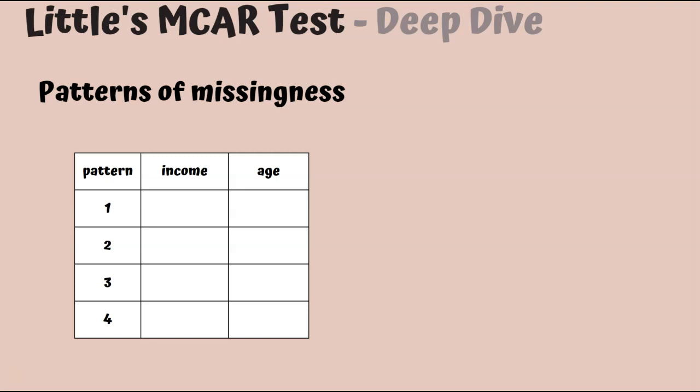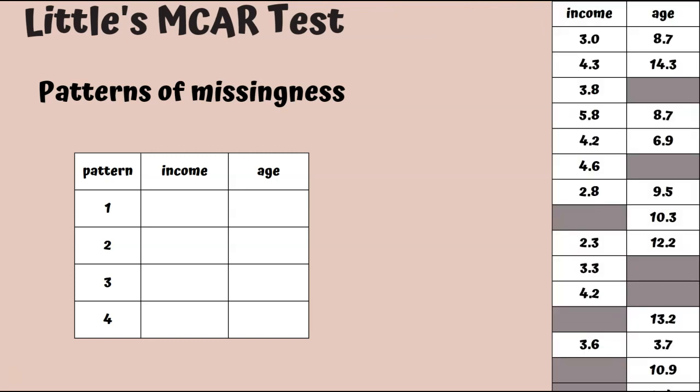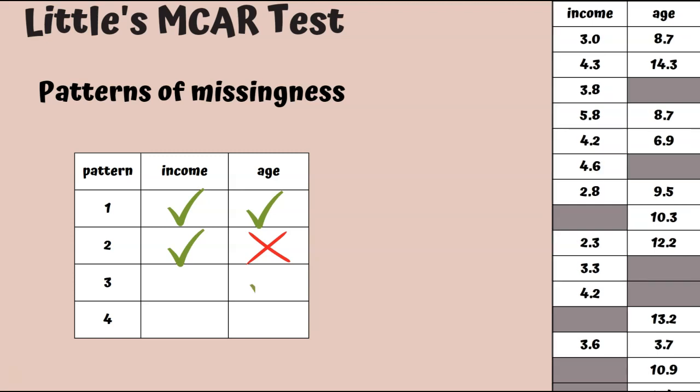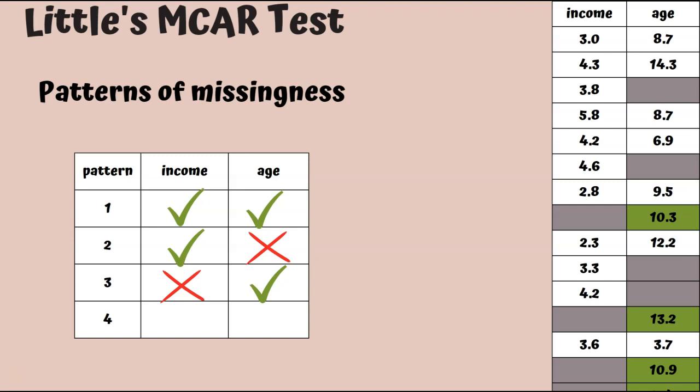Let's look more closely at what's happening in this test. Whenever there's missing data, we can look at the patterns of missingness. In our example with income and age, there's four possible patterns. In the first pattern, you have the cats that have both income and age observed, like you see shown in green. The second pattern is that income is observed, but age is missing, like you see for these couple of cases. In the third example, you have income missing, but age observed. And finally, it's possible that both income and age are missing, although we don't have any examples of this in our data set.